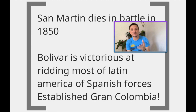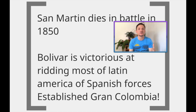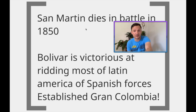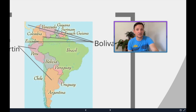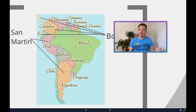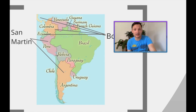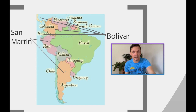San Martín was very successful liberating the southern regions of South America. Bolívar is victorious at ridding most of Latin America of Spanish forces and establishing a new Creole-run country in the very northern area. Looking at the map: all the areas of Ecuador, Colombia, Venezuela, Panama, and the northern areas of Peru were established by Bolívar. San Martín liberated the entire southern area. Spain is now no longer involved in South America. Bolívar liberates the north; San Martín liberates the central and southern area.